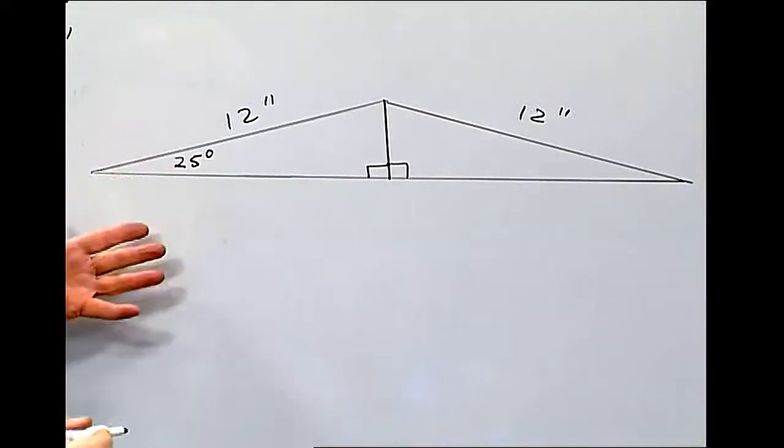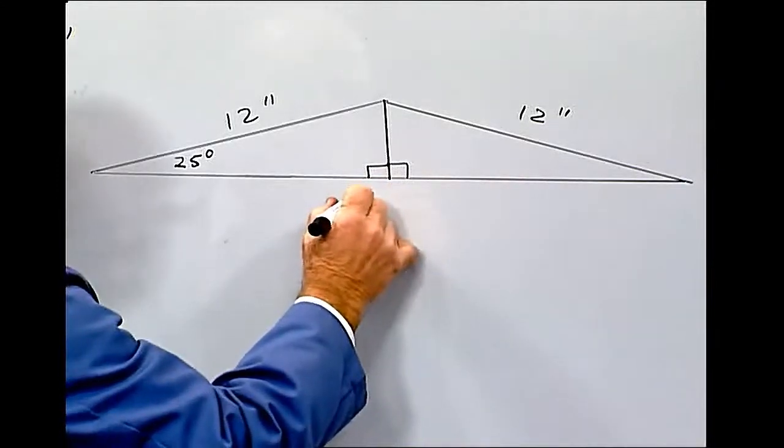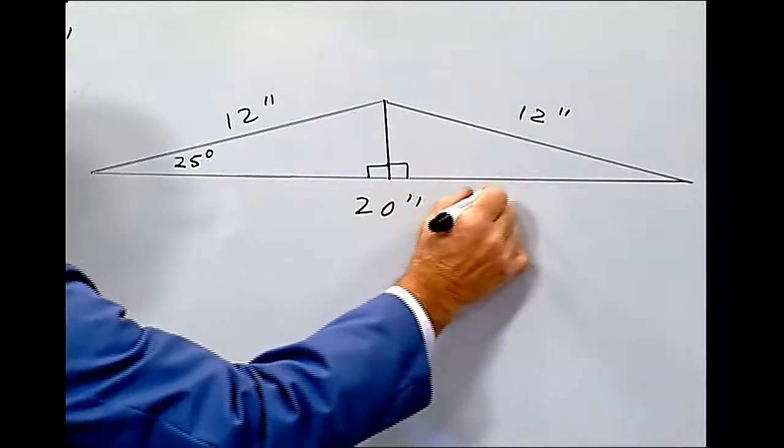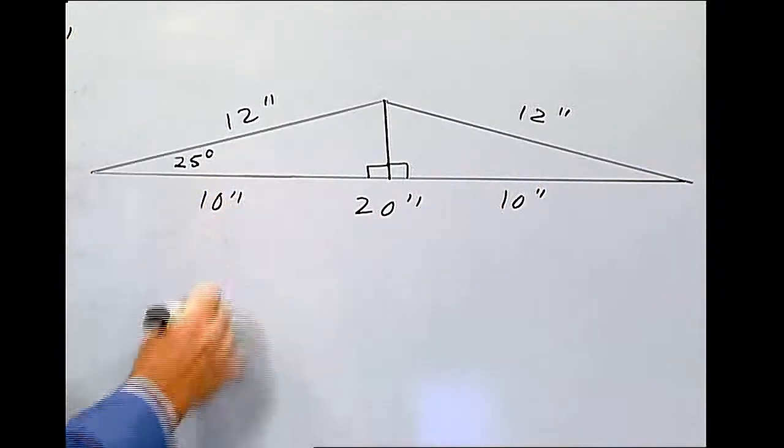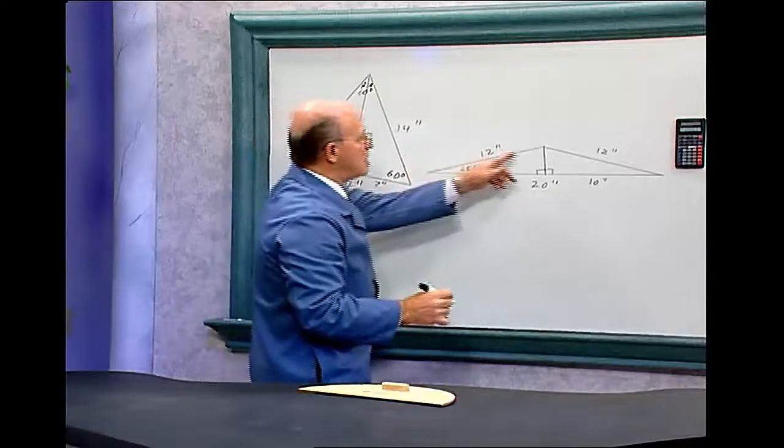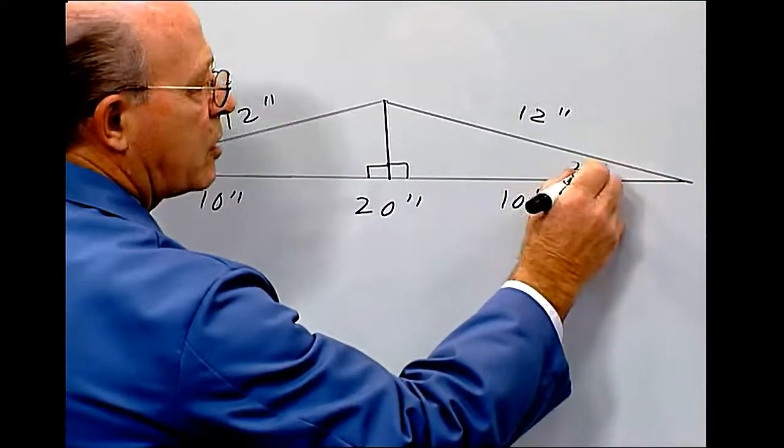This base is, let's say it's 20 inches. Then you know each side's going to be 10 inches. Since these two sides are equal, you know these two angles are equal. So this also will be 25 degrees.